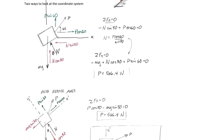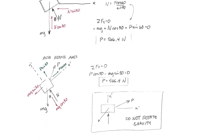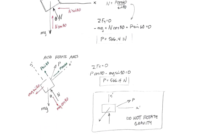A better way to do inclined plane problems — and the way I will always try to do it — is to rotate the axes. Instead of having x and y go horizontally and vertically, you can have x prime and y prime oriented along and perpendicular to the incline. This makes the force equations a little easier, and for most inclined plane problems it's the recommended approach.